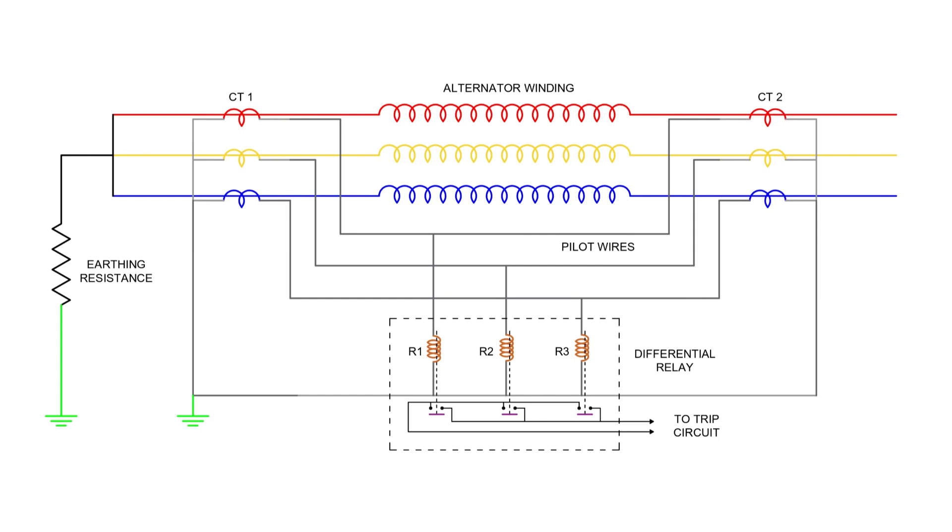The secondaries of each CT set are connected in star, and both star points are joined using a four-core pilot cable. This ensures that each pair of CTs has an independent circulating path, allowing accurate current comparison.